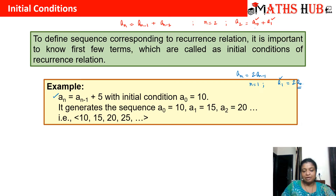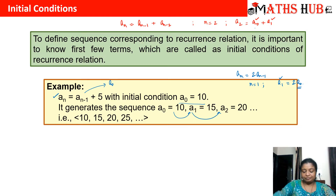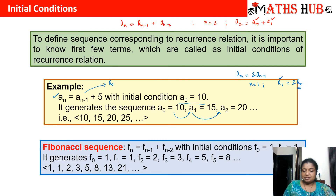For example, for the recurrence relation an = an-1 + 5, putting n = 1 gives a1 = a0 + 5. The initial condition is given as a0 = 10. Once a0 is known, all terms can be determined: if a0 is known we calculate a1, if a1 is known we calculate a2, and so on. The terms of the sequence become 10, 15, 20, 25, and so on.